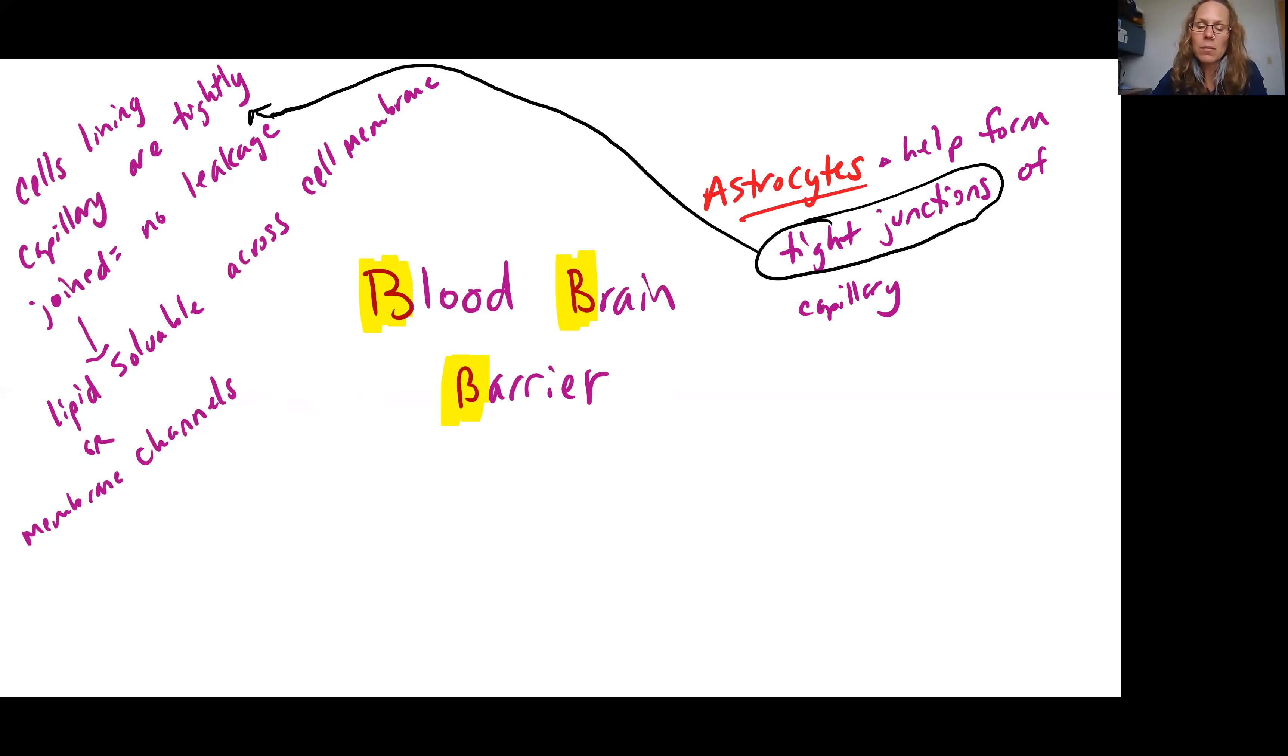The cells that are involved in the blood brain barrier are called astrocytes and these are another one of our neuroglia cells. Your astrocytes are helping to form those tight junctions of the capillary and helping to control the permeability of those endothelial cells. Endothelial cells are the cells of the capillary.